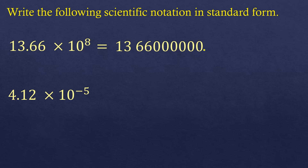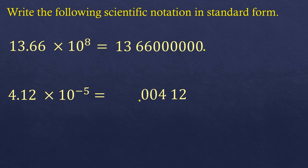The next one is 4.12 times 10 to the power of negative 5. Since it's a negative exponent, this is a very small number. We take 4.12 and move the decimal point 5 times to the left: 1, 2, 3, 4, 5. So that equals 0.0000412. That is the standard form of the given scientific notation. That's how you convert scientific notation to standard form and vice versa.